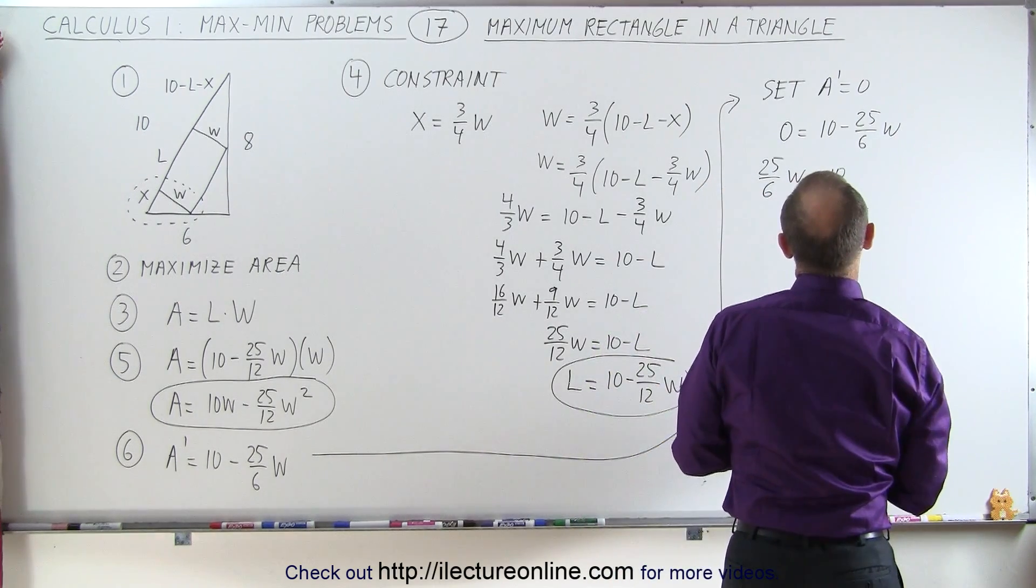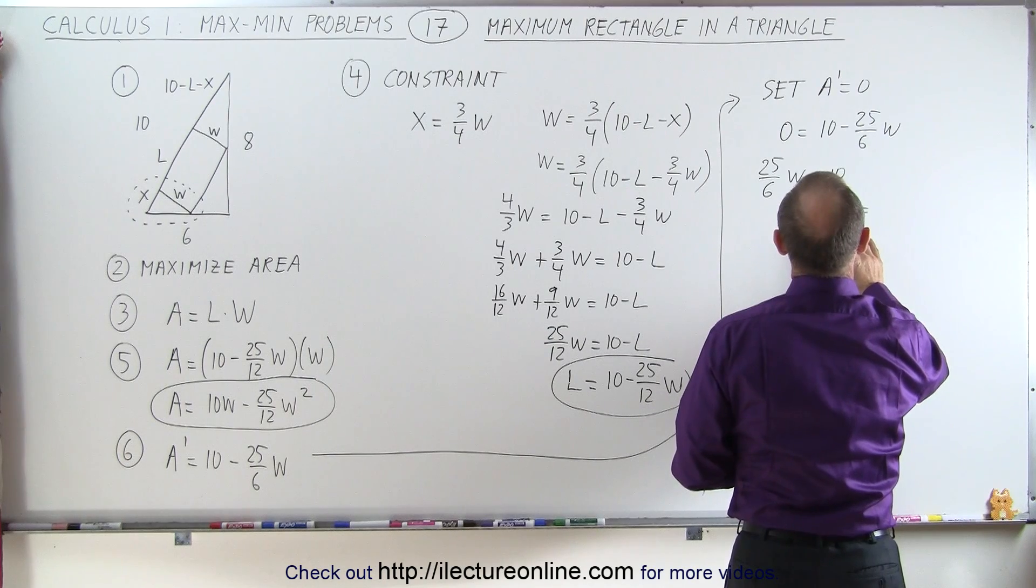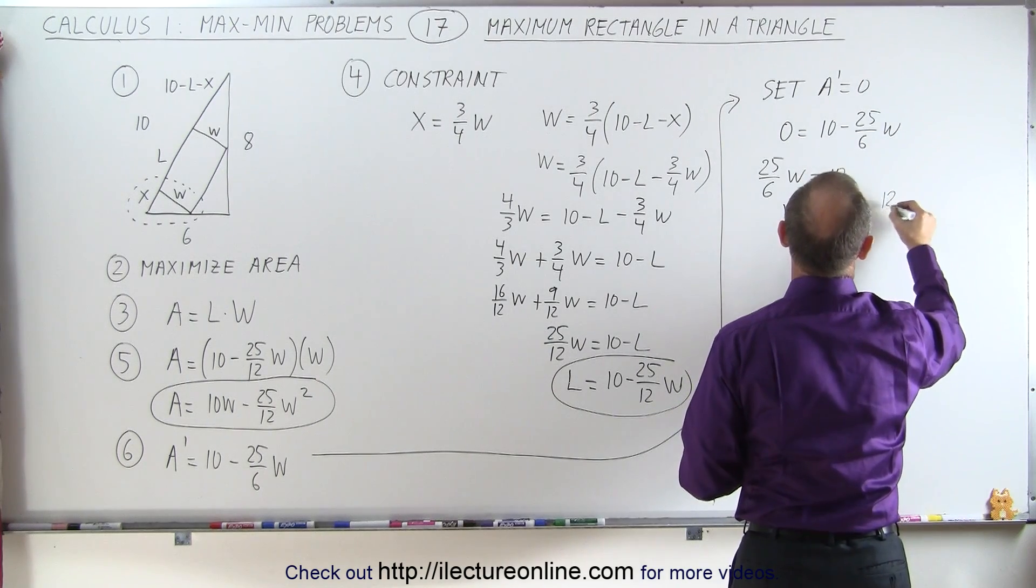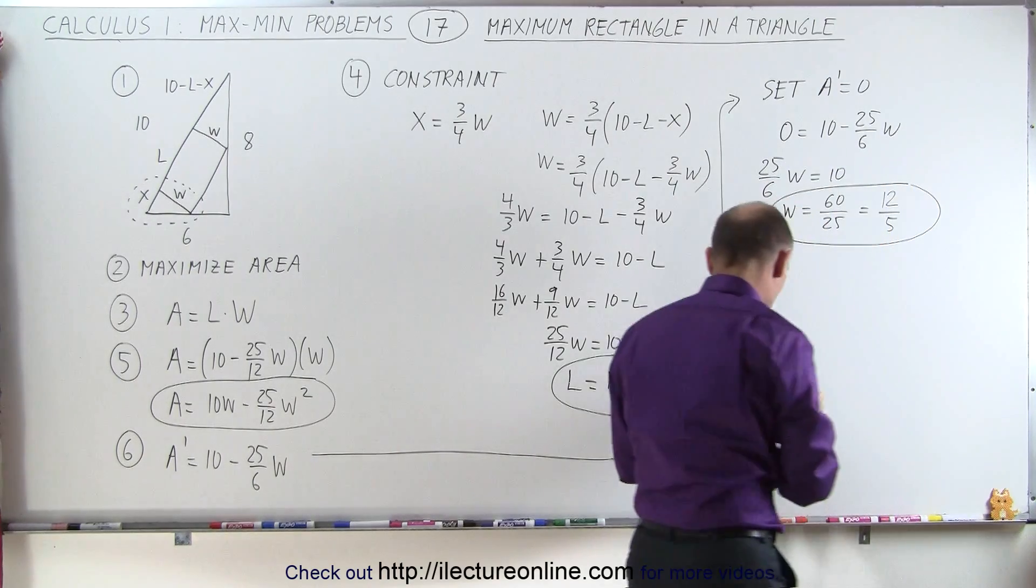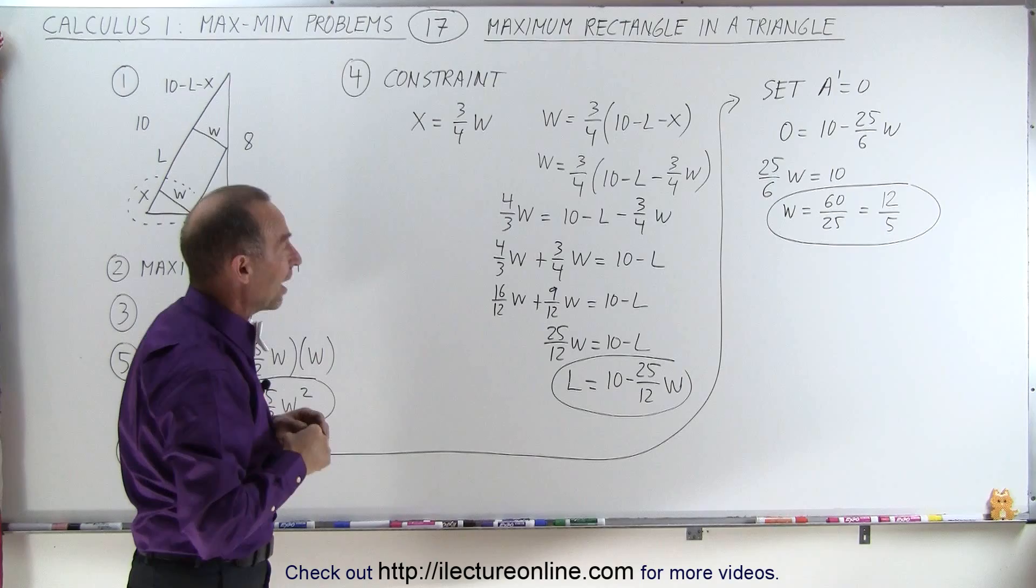So we can reduce that to divide both top and bottom by 5. We have 12 divided by 5. So there's the value of the width of the rectangle, 12 divided by 5.